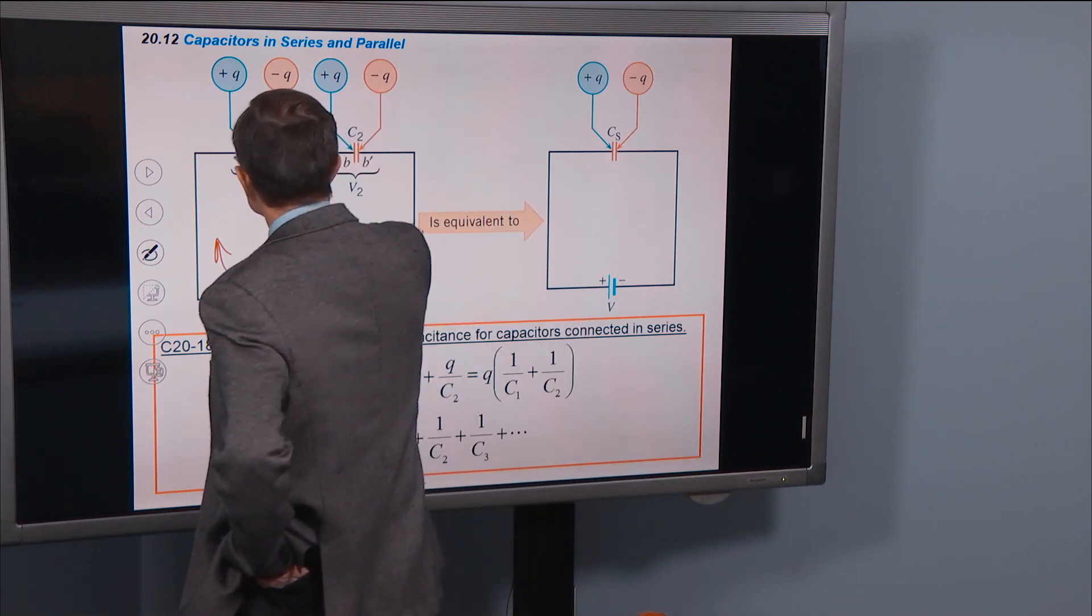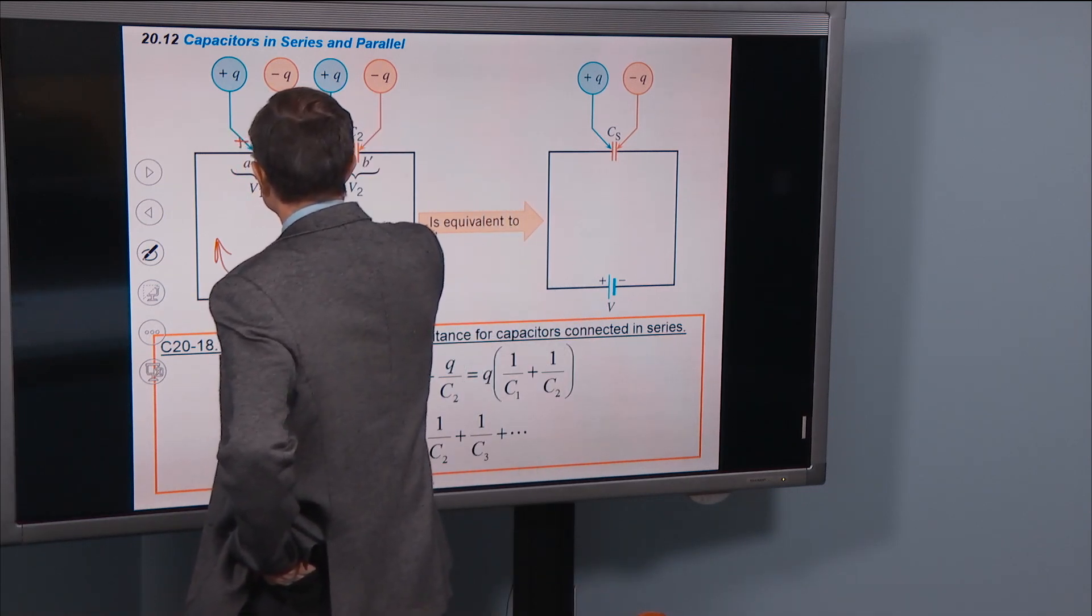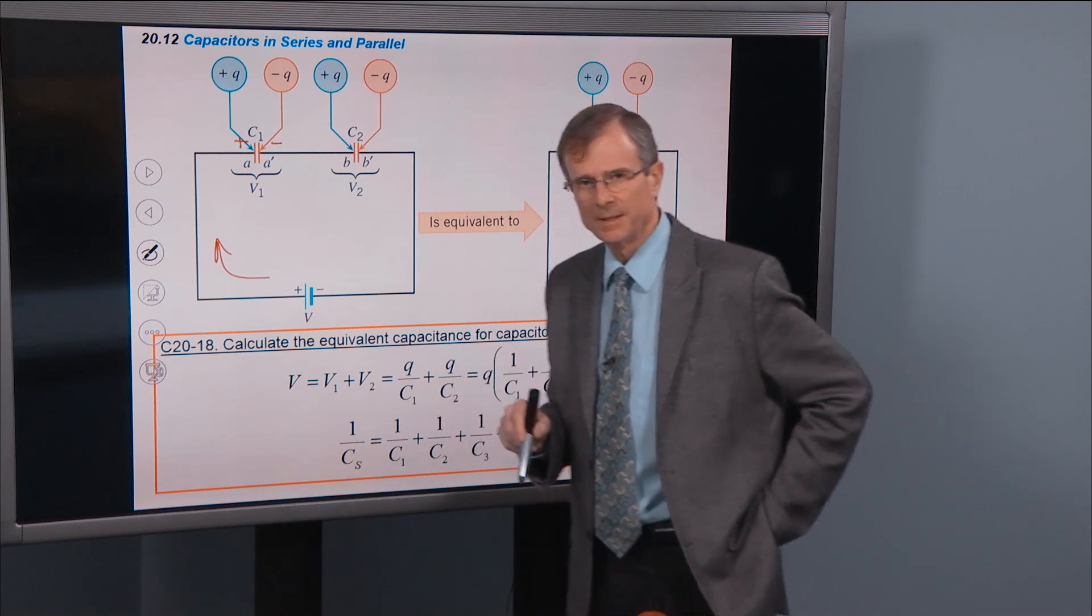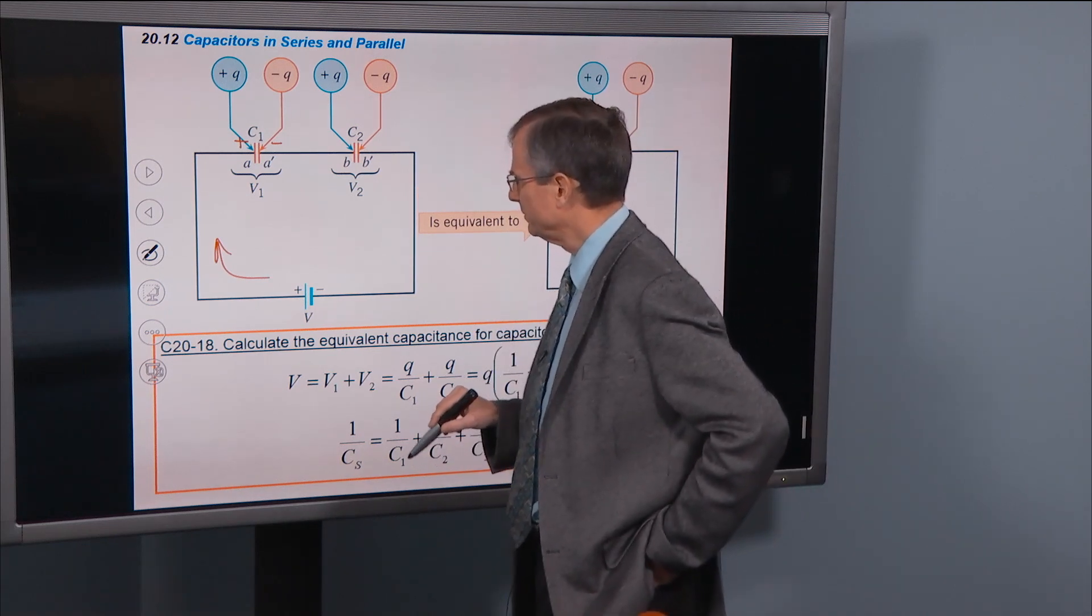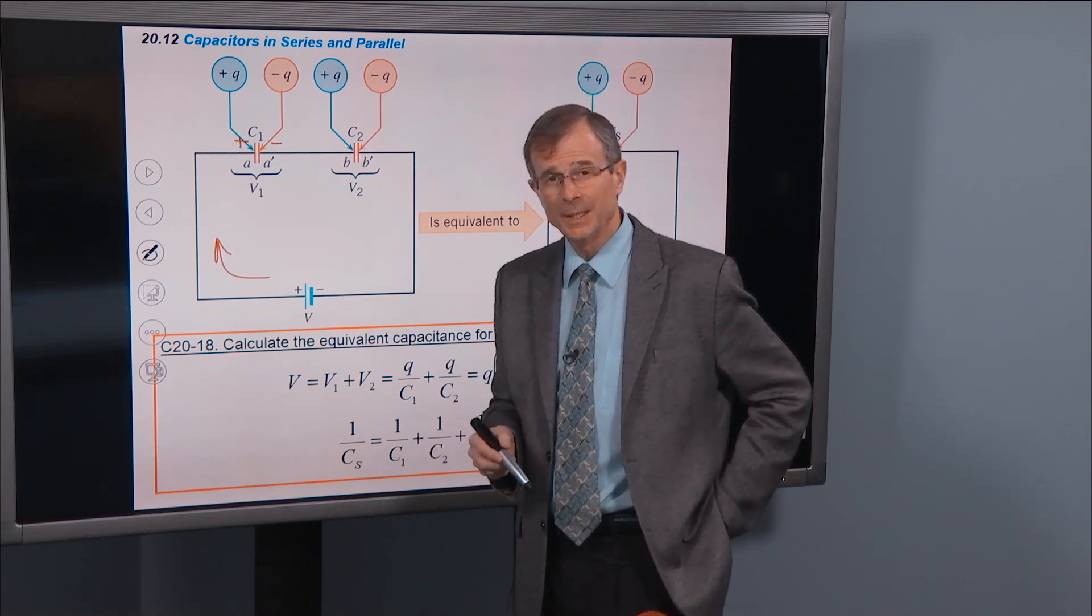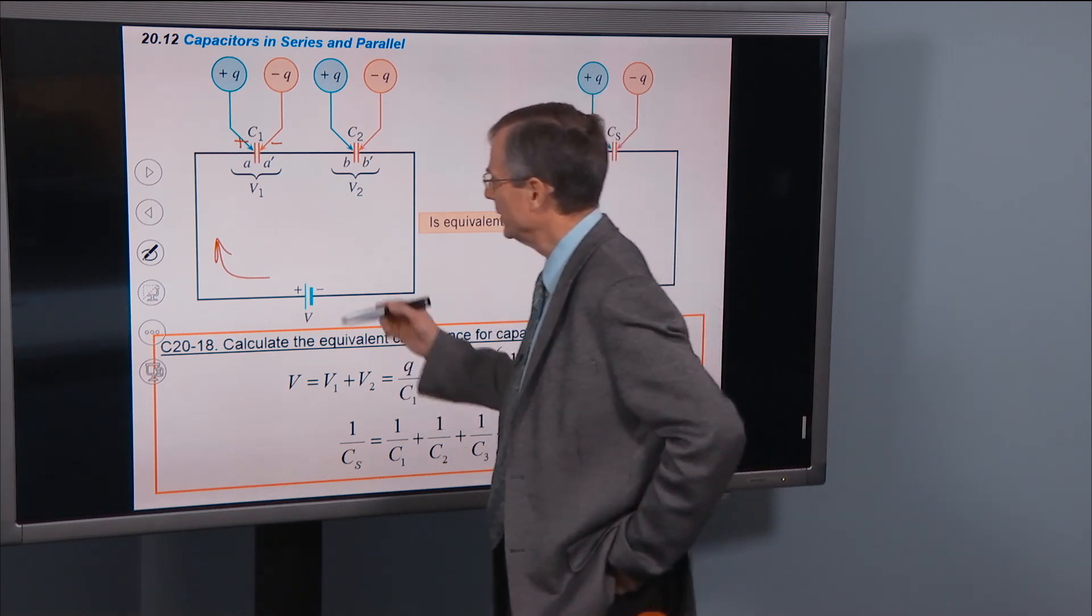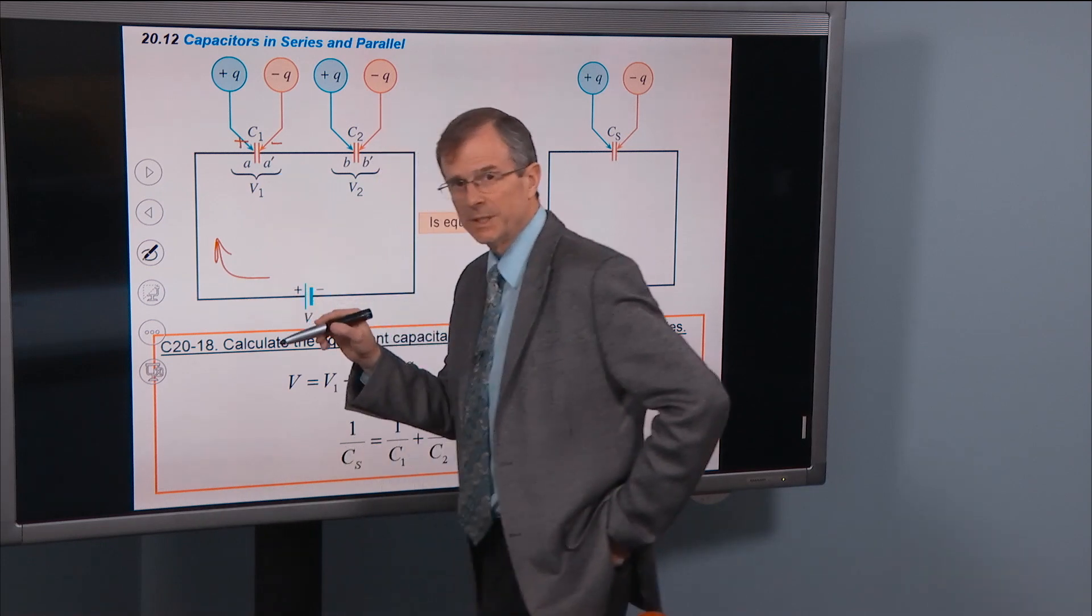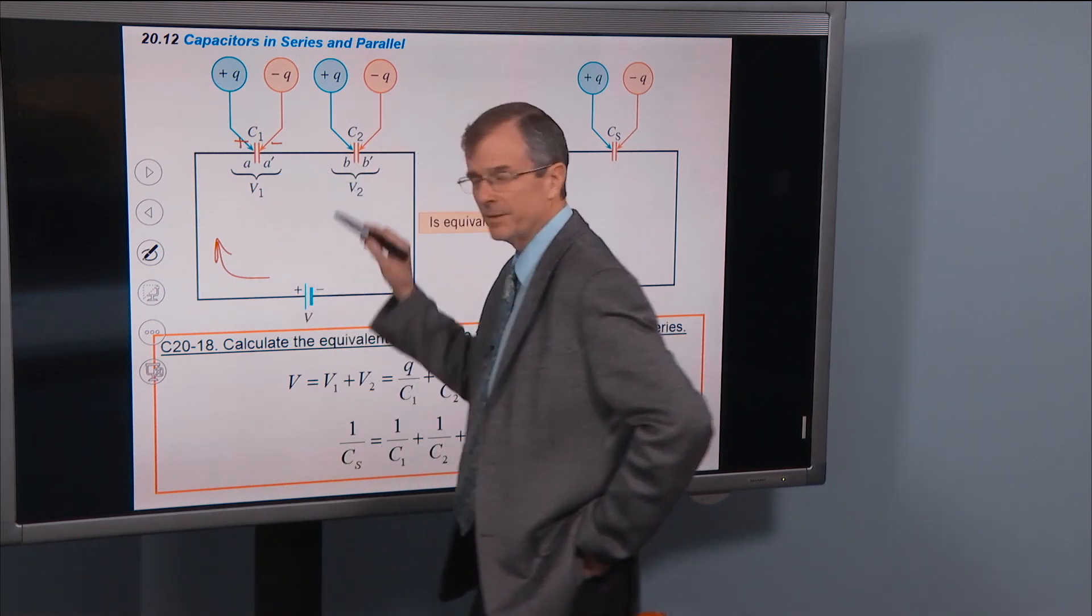So this would be the positively charged plate on the left side and the negatively charged plate on the right side. What happens actually is you do think of a current through the capacitor, but it's not really through the capacitor. The current comes up to it and then comes out the other side.